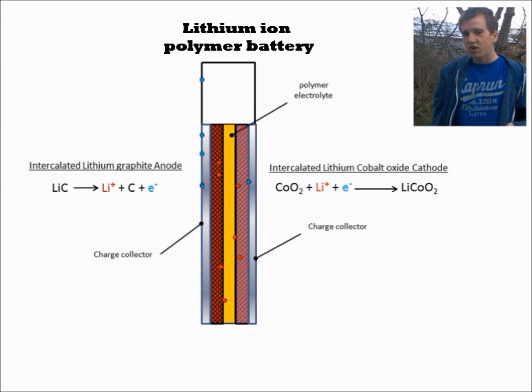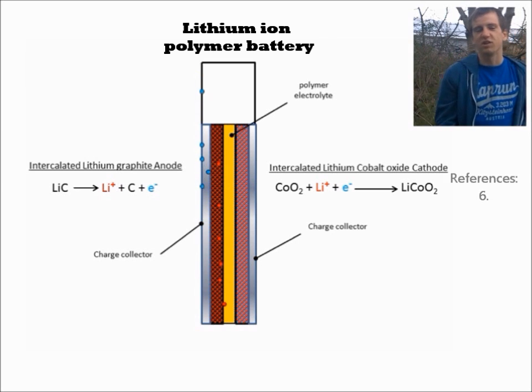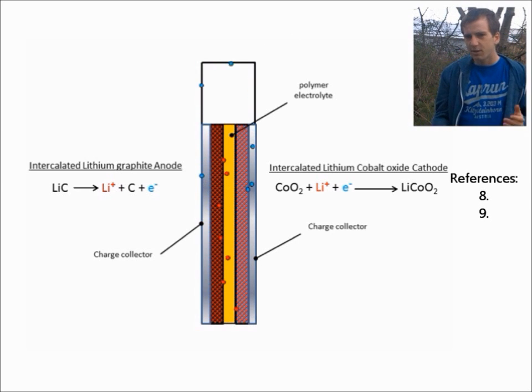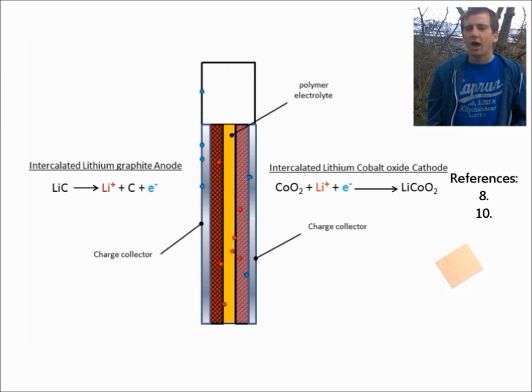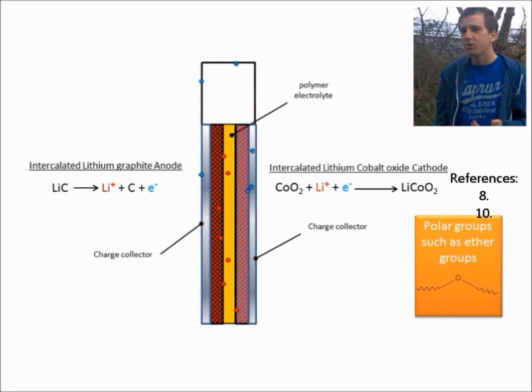Because thanks to techniques such as spin coating, or even inkjet printing, we can apply wicked thin layers of these polymers, which allows us to make ever slimmer batteries, great if we're making ever slimmer smartphones. All we need from our polymer is we need groups that are capable of interacting with the lithium ions, and we need a certain degree of motional freedom within the polymer, so the lithium ions can actually be passed through it.